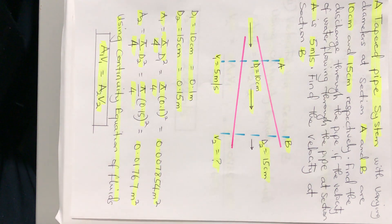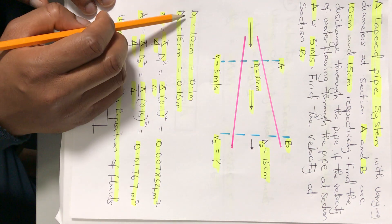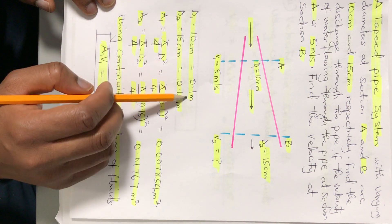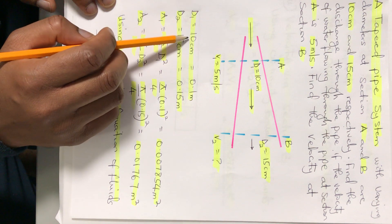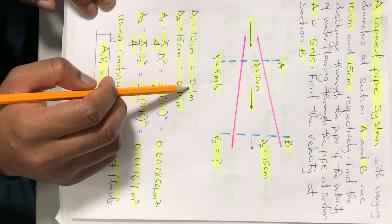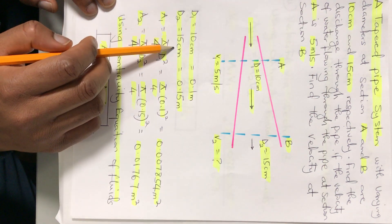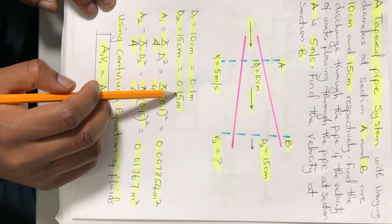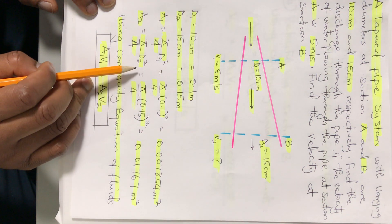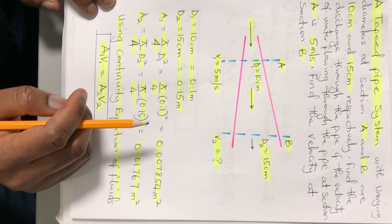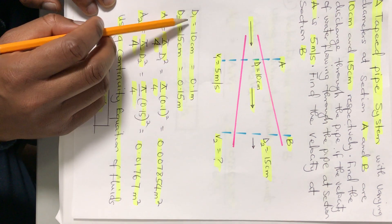Now let's pull out our parameters. Diameter 1 equals 10 centimeters, which we convert to 0.1 meters. Diameter 2 equals 15 centimeters, which gives us 0.15 meters. We need to convert diameters to areas in order to use the equation of continuity.